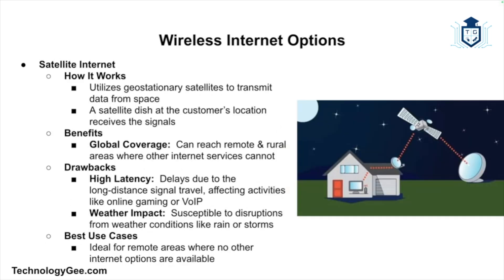Next, let's talk about satellite internet. Satellite internet uses geostationary satellites to beam data from an orbiting satellite down to a dish installed at the customer's location. The main benefit is global coverage — since it relies on satellites in orbit, satellite internet can reach remote or rural areas that other service types cannot.